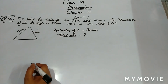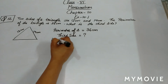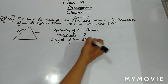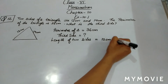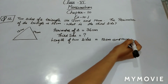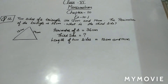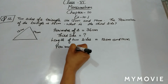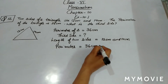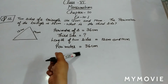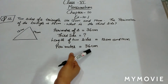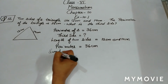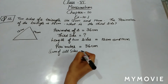The length of the two sides given to us is 12 centimeter and 14 centimeter. The perimeter given is 36 centimeter. We know that the perimeter of a triangle equals the sum of all its sides, and that sum equals 36 centimeter.